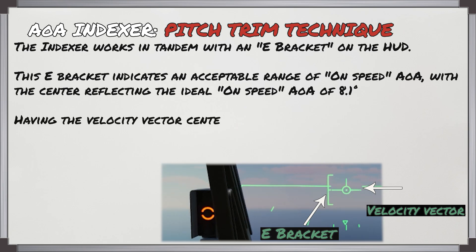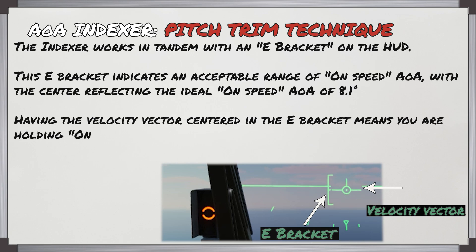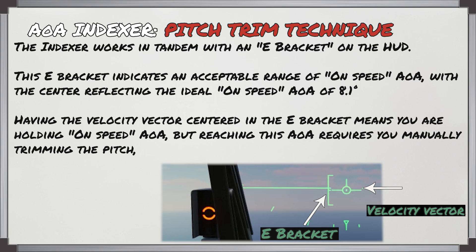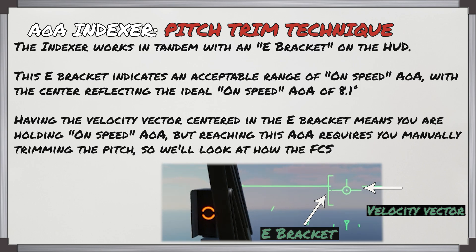Having the velocity vector centered in the E-bracket means you are holding an on-speed angle of attack, but reaching this AOA requires you to manually trim the pitch, so we'll look at how the FCS works in order to hold this angle of attack.